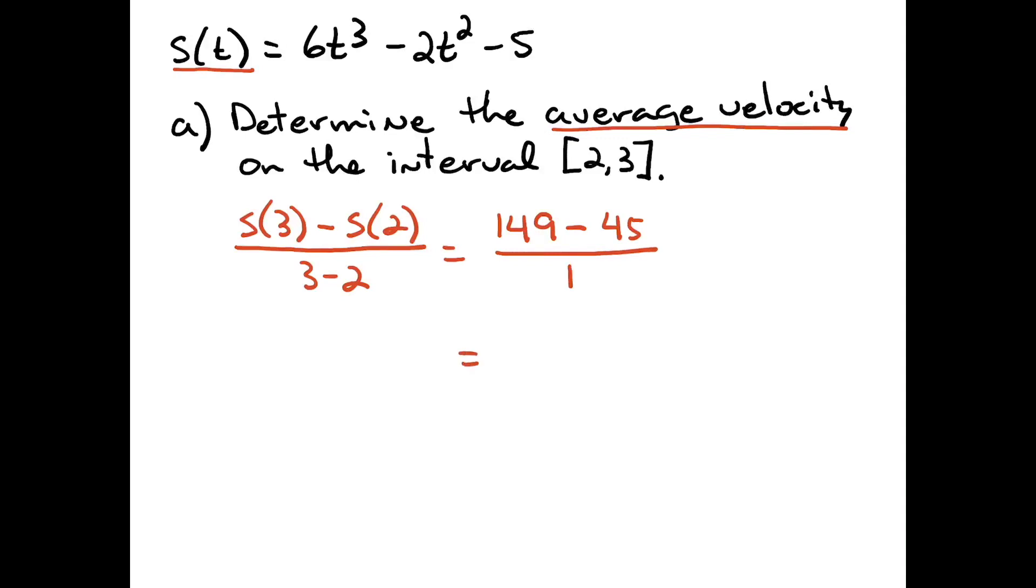And then when you subtract that out there, you're going to get 104. And we said that s was measured in feet and t is measured in seconds. So this is going to be 104 feet per second there for the average velocity.